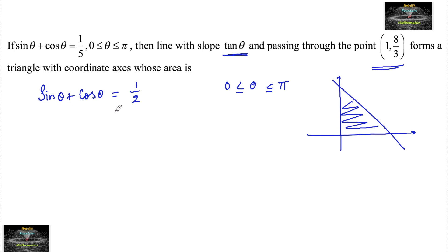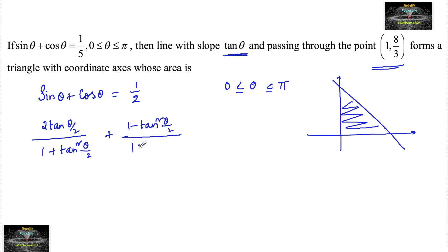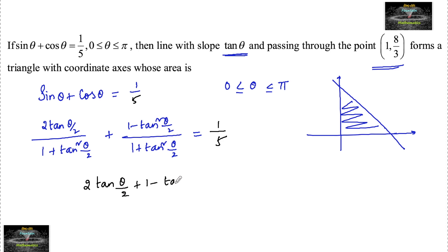Given sin θ + cos θ = 1/5, let us write this in terms of tan(θ/2). We use the identities: sin θ = 2tan(θ/2) / (1 + tan²(θ/2)) and cos θ = (1 − tan²(θ/2)) / (1 + tan²(θ/2)). Substituting and multiplying through, we get: 5(2tan(θ/2) + 1 − tan²(θ/2)) = 1 + tan²(θ/2).